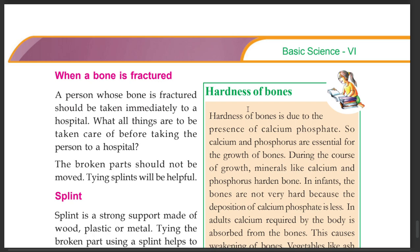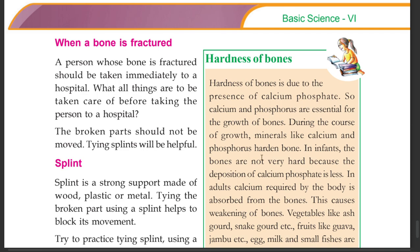Hardness of bones is due to the presence of calcium phosphate. During the course of growth, minerals like calcium and phosphorus harden the bones. In children, bones are not very hard because the deposition of calcium phosphate is less.